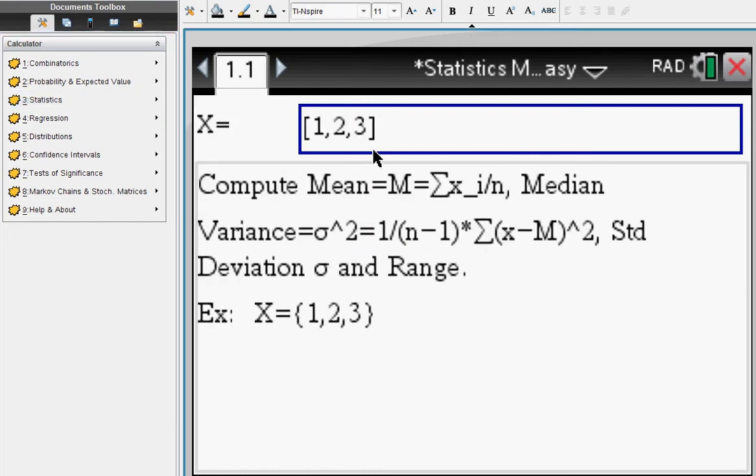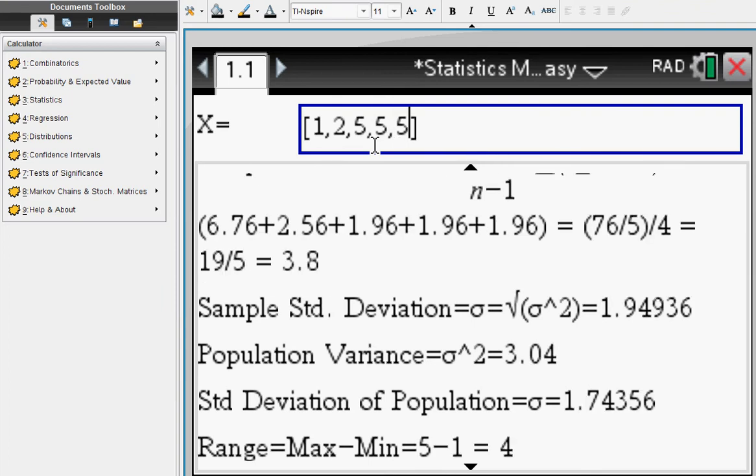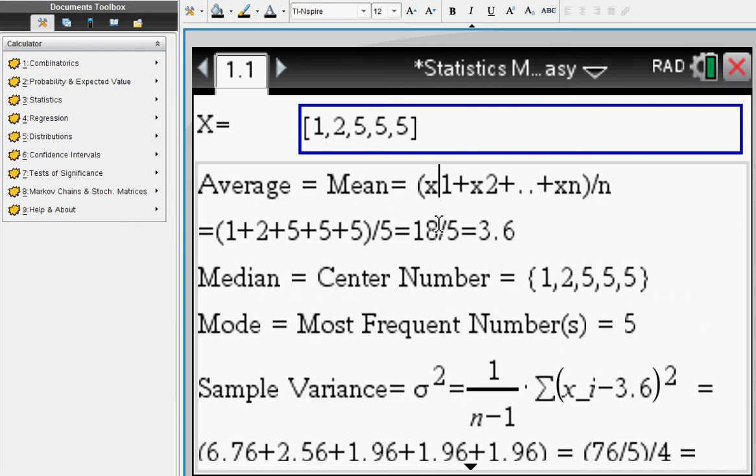Statistics. Find average, mean, mode. Just enter your list up there. Say we enter this: 1, 2, 5, 5, 5. And then you find your mean, your median. Obviously the mode is...